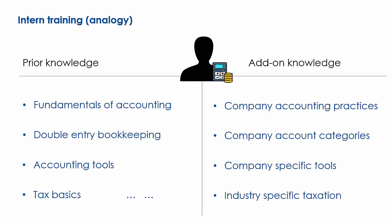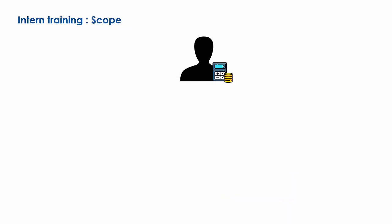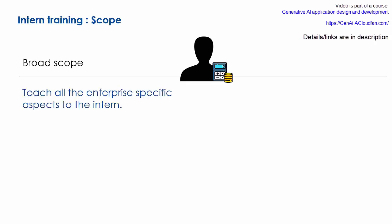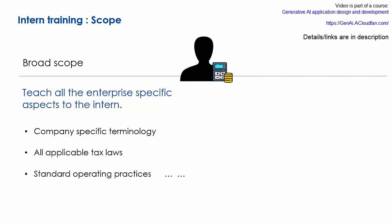Now, let's consider how you would use this intern within your organization. If you want the intern to handle multiple general tasks, the additional training would need to cover a broader scope. This means you would teach them about your company's overall accounting processes, maybe providing a high-level overview of different tasks without diving too deeply into any one area. For example, you would ensure the intern learns your company's accounting terminology across all accounting branches, they understand all applicable tax laws, and they become familiar with the company's standard operating procedures, etc.